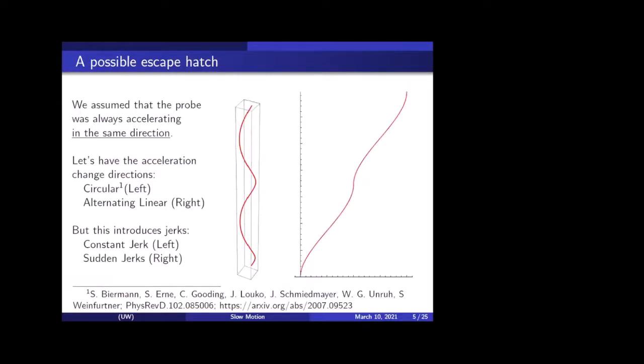This is all to motivate our proposal, because we claim to be able to get around this. So is picking one of these unavoidable? I'm going to claim that it's not, and we have a good way to do that. There are actually two ways around that sort of quick argument that I presented. What we assumed in that is that the probe is always accelerating in the same direction. And that's why we accumulated all the speed and all this distance in the same direction, which ultimately is what caused one of the problems. So let's instead have the acceleration change direction. And immediately two ways to do that should come to mind. There's one where you have a circular trajectory, which is discussed in this paper. And I think we have a few of the authors here in the audience, Cisco and Jorma and Silke are here, I think.